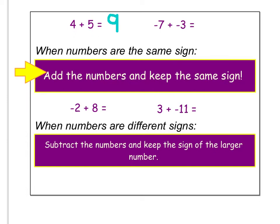Now the next one, they're both negative numbers. So we have negative 7 plus negative 3. I add 7 plus 3, which is 10. And since they're both negative, my answer is negative 10.